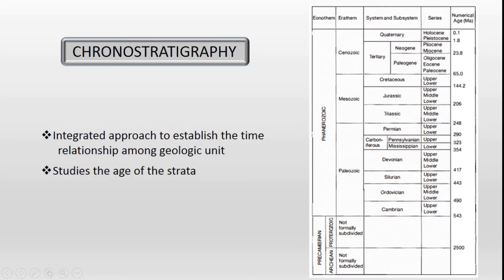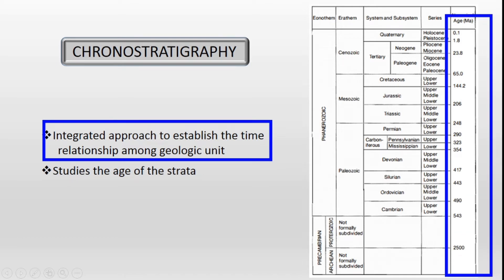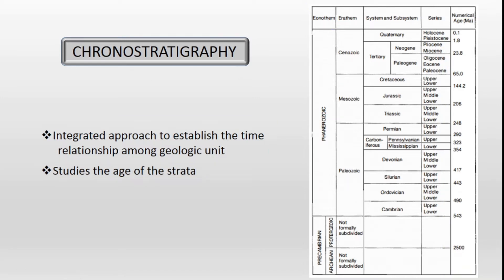Chronostratigraphy is an integrated approach to establish the time relationship among geological units. Here geological units are formed to interpret all these in numeric values. This type of stratigraphy studies the age of strata. We can see the units of chronostratigraphy in a picture — the largest unit and the smallest unit are shown. You can pause the video or take a screenshot to note them down.